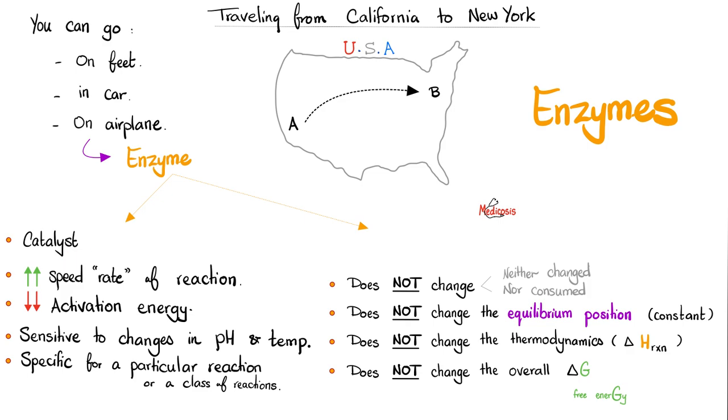Enzymes are catalysts. They boost the speed of the reaction. They lower the activation energy, sensitive to changes in pH and temperature, specific for a particular reaction or set of reactions. They do not get changed or consumed by the reaction. They do not alter the equilibrium position. They do not alter the thermodynamics or the reaction's heat. They do not alter the overall free energy.